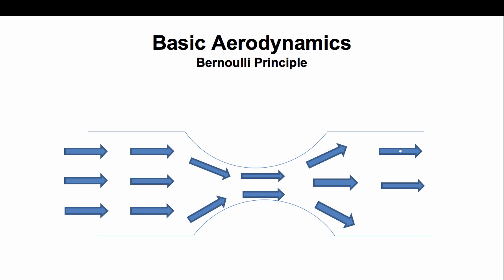Let's take a look at the diagram to understand this concept a little better. As the air, or fluids in general, travel through the tighter passage of the tube, the velocity increases since fluids travel at a faster speed to reach the end of the curve.